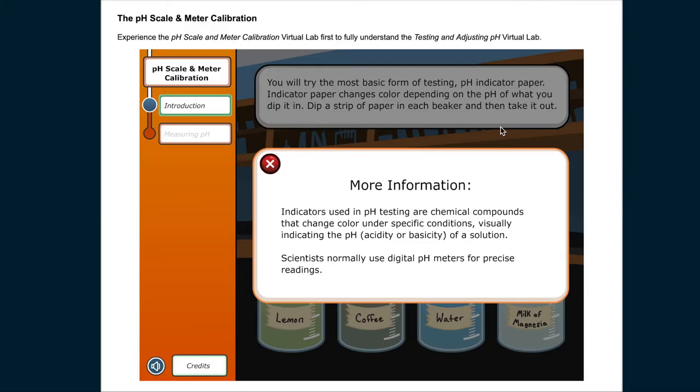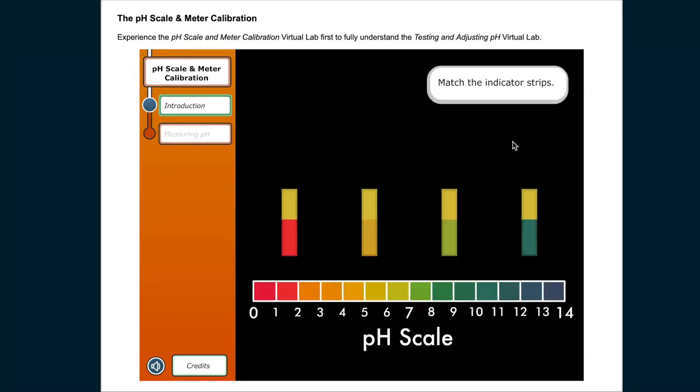Scientists normally use digital pH meters for precise readings. Match the indicator strips.